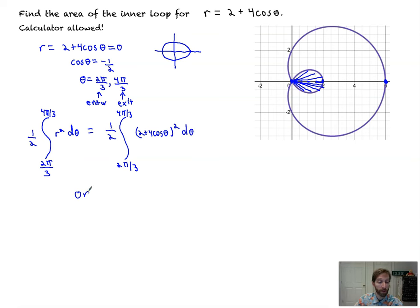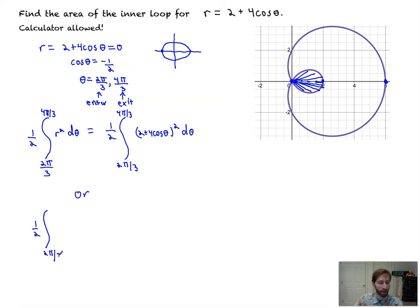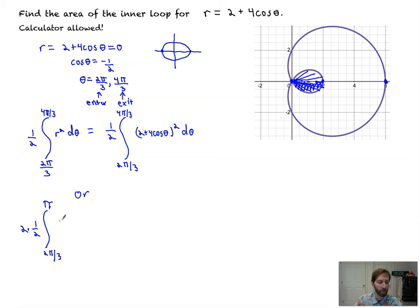The other way is with symmetry. We figure out where the inner loop is most negative — halfway between two pi over three and four pi over three, which is at pi. So we take the integral from two pi over three to pi, double it, and that finds the bottom half of the inner loop, then doubles it to get the top part as well. That would be (2 plus 4 cosine theta) squared. Both integrals give the same answer.